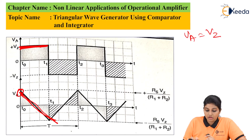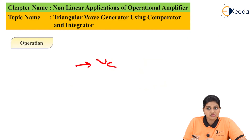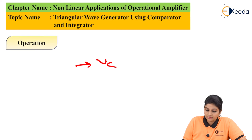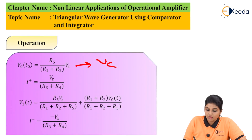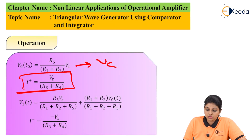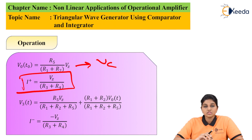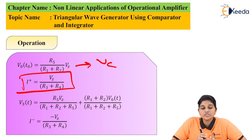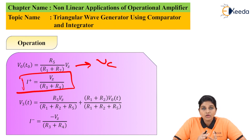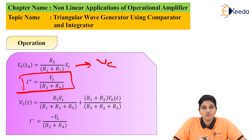Now the current on the capacitor is given by: I_positive = Vz / (R3 + R4). So in this way, during the interval 0 to T1, one waveform is produced for the square wave.